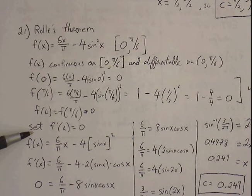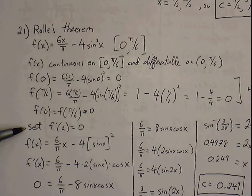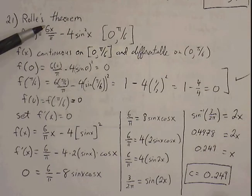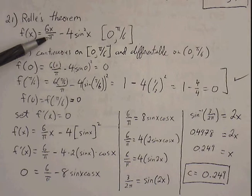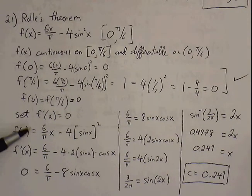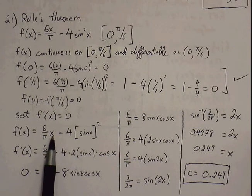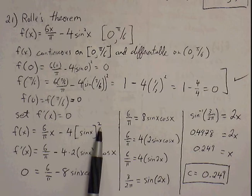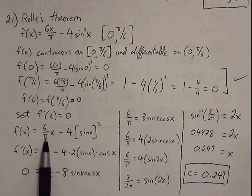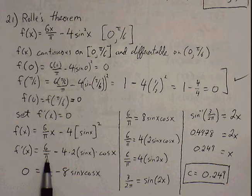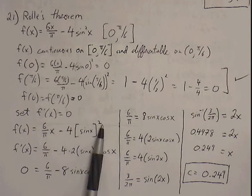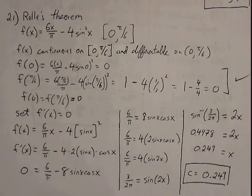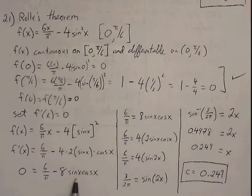Now we can guarantee there's going to be at least one point where the slope of the tangent line is 0. We set our derivative equal to 0. I'll rewrite the function as 6 over pi times x to apply the derivative rule easily, and pull the exponent 2 outside the sine function as a reminder that we'll use the chain rule. The derivative of 6 over pi times x is simply 6 over pi. Using the chain rule, bring down the 2, keep the bracket, multiply by the inner function's derivative — sine times cosine. So f prime equals 6 over pi minus 8 sine of x cosine of x.